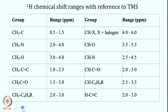Now let us look at actual chemical shift ranges with respect to TMS. For a CH3 proton, which is shielded due to SP3 hybridization, the chemical shift comes close to 0 — around 0.5 to 1.5 ppm. If we attach nitrogen instead of carbon, nitrogen is electronegative and pulls electrons away from CH3, deshielding it, so the chemical shift moves to 2 to 4 ppm. Attaching oxygen, which is more electronegative, shifts it further to 3 to 4 ppm.